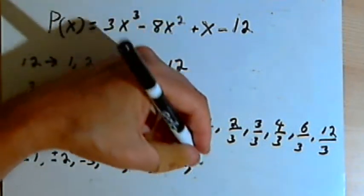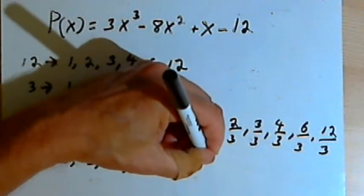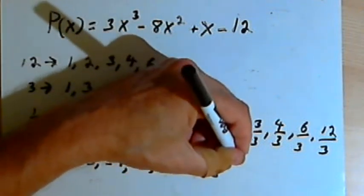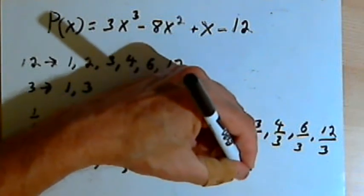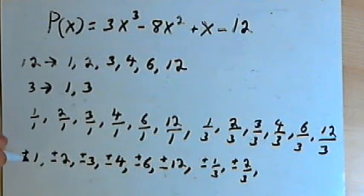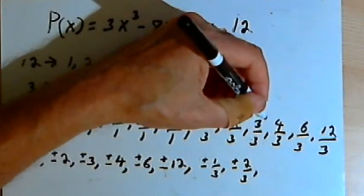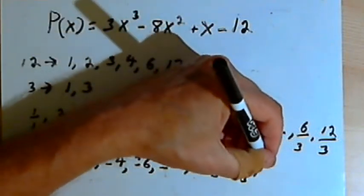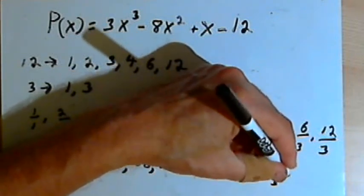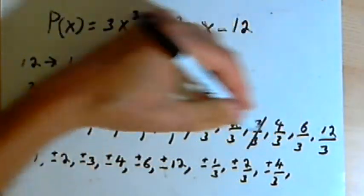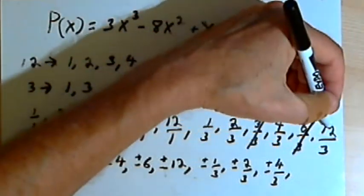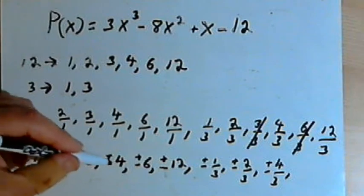I've got 1/3 - I can't reduce that, so that's ±1/3. 2/3 can't be reduced either, so that's ±2/3. 3/3 is the same as 1, and I've already got that. 4/3 can't be reduced, so that's ±4/3. 6/3 is the same as 2, which I already have. And 12/3 is the same as 4, which I already have.